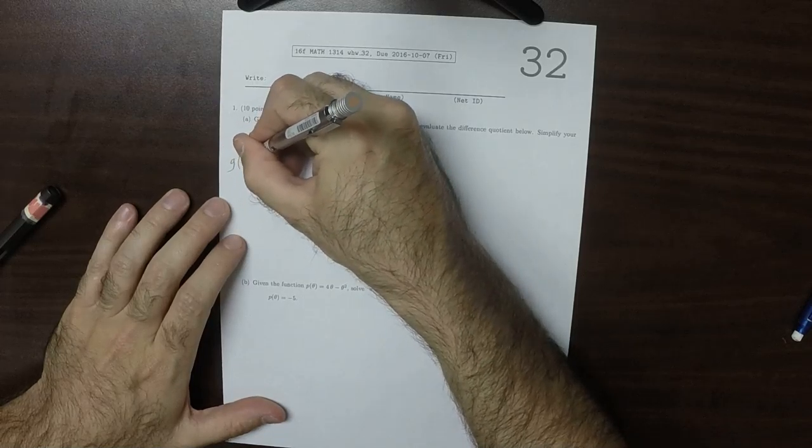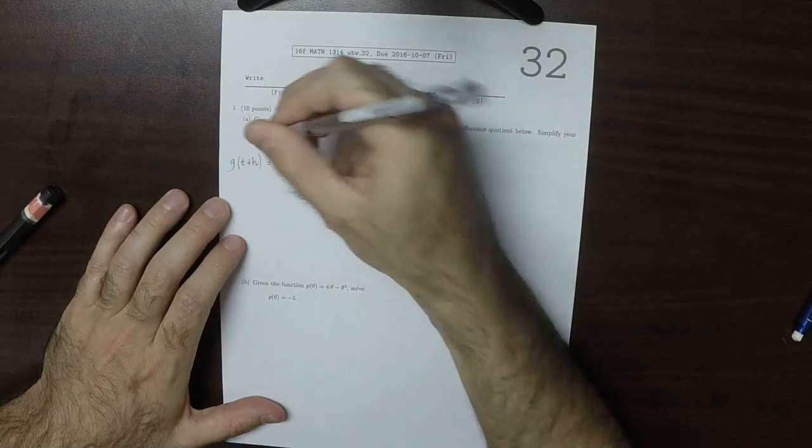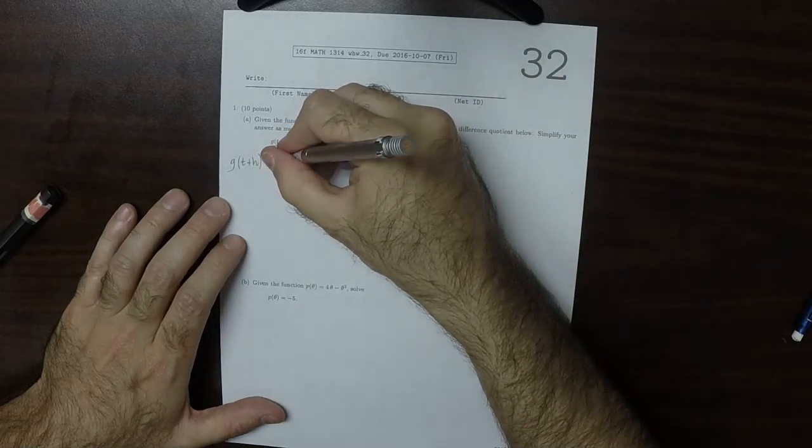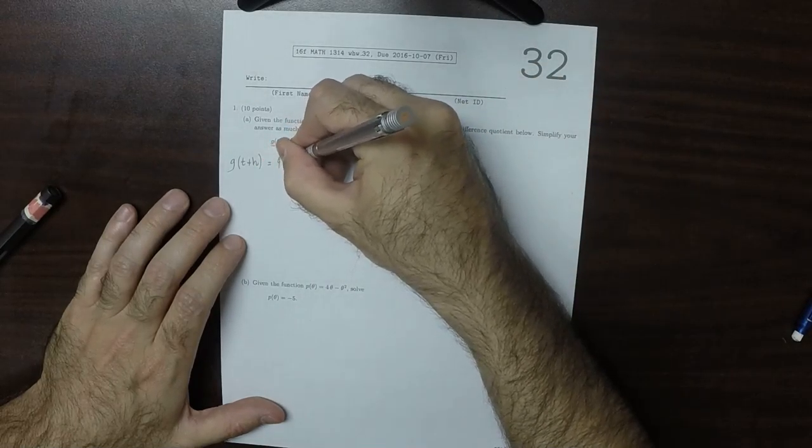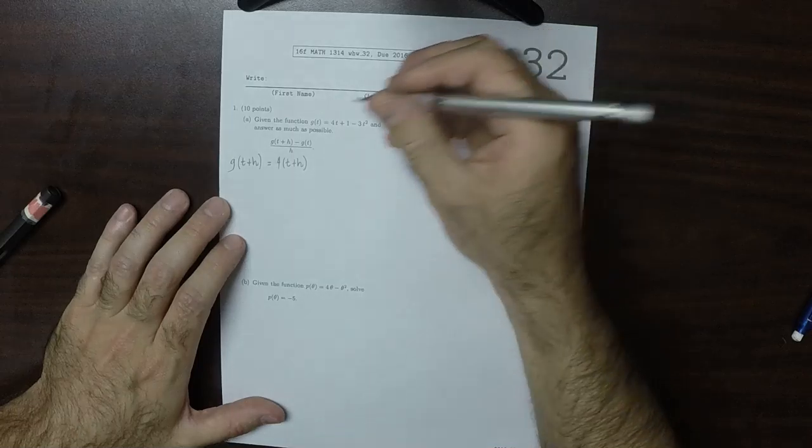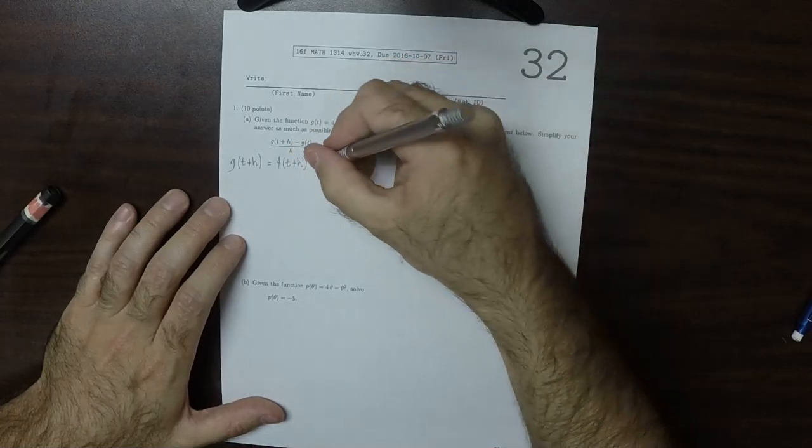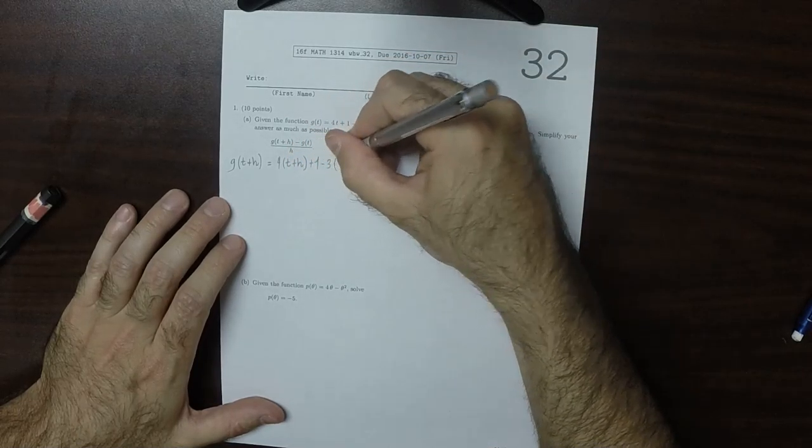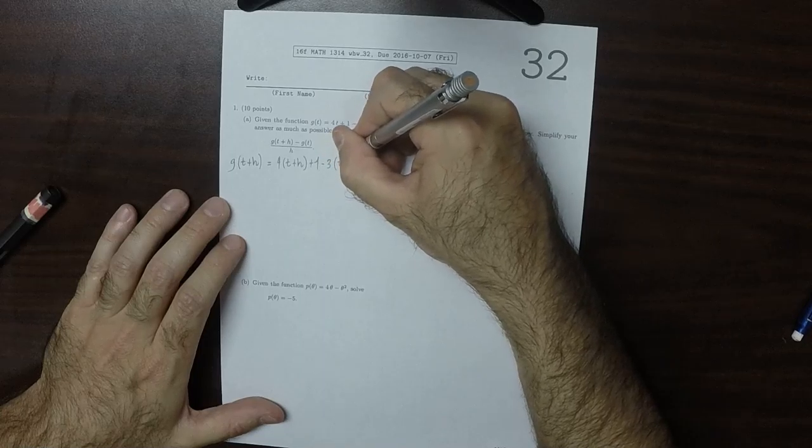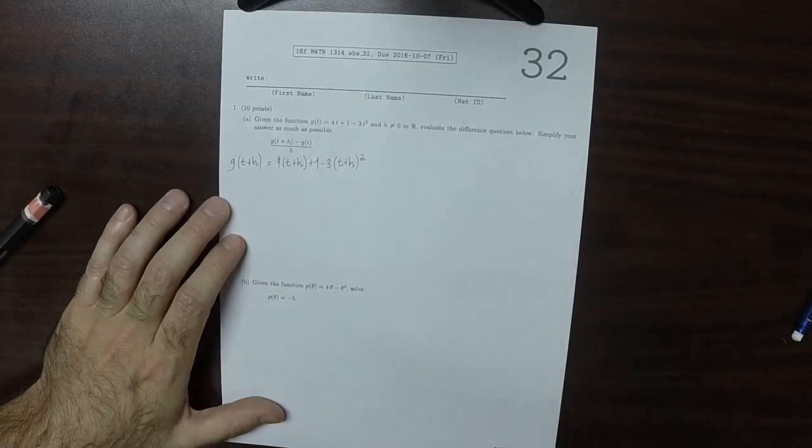G of t plus h, well that will be 4(t+h) + 1 - 3(t+h) squared.